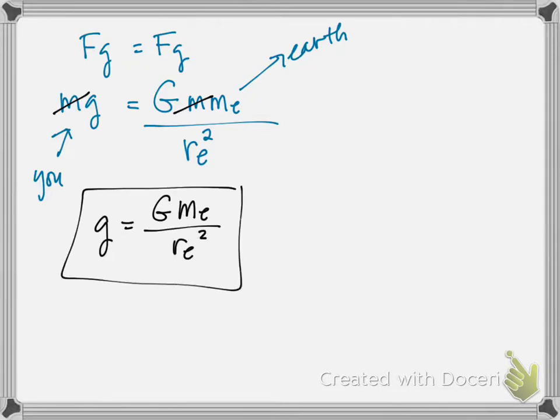And this is how you find acceleration due to gravity on other planets. If you enter the mass of the Earth and you enter the radius of the Earth here, what you get is g equals 9.8 meters per second squared, which you can do if you don't believe me.